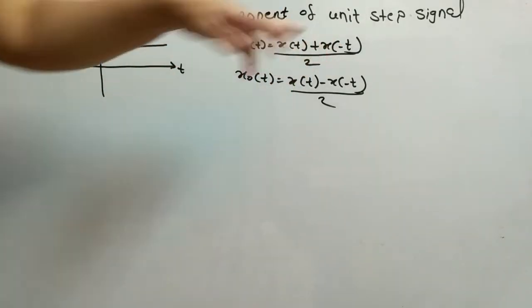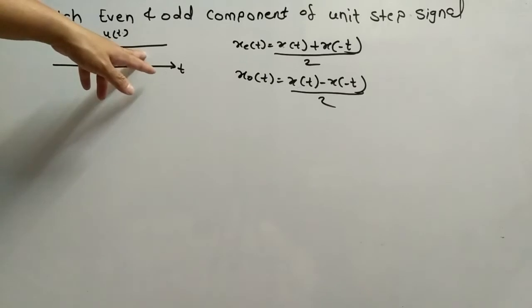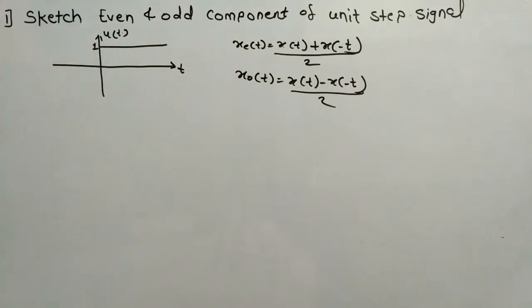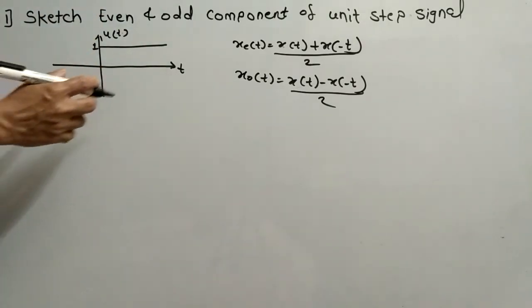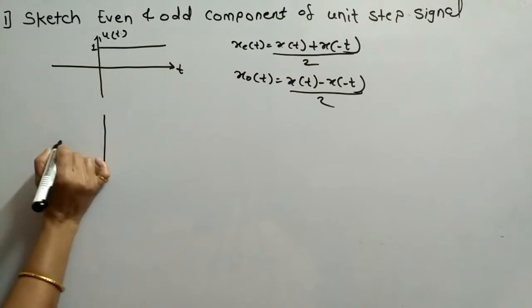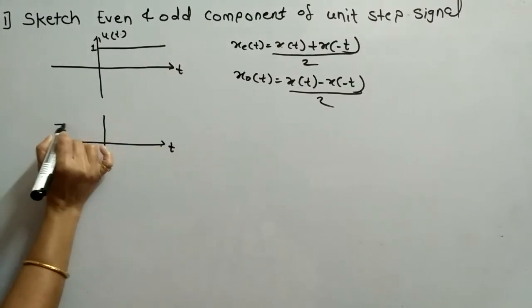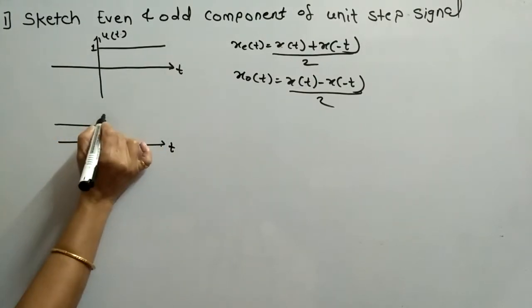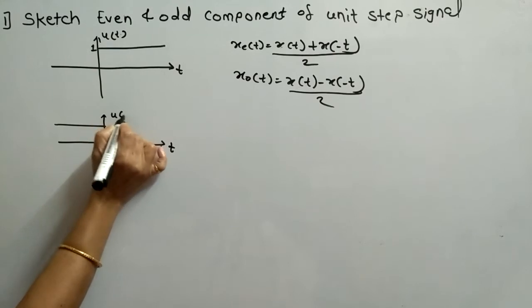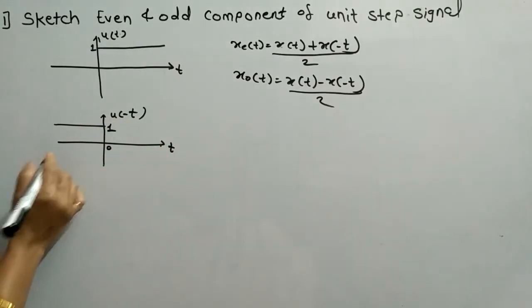Now we will sketch X(-T). X(-T) means you simply flip the signal about the vertical axis. So this is U(-T).